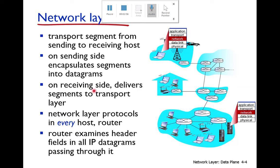On the receiving side, when the packet is delivered through the network to the destination machine, the destination machine removes the network layer header from the packet — this is called de-encapsulation. The rest of the packet is then delivered to the transport layer. So on the receiving side, the network layer delivers the segment to the transport layer.